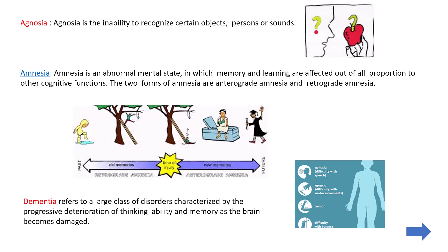Amnesia is of two types: anterograde and retrograde amnesia. Retrograde amnesia means that whatever happened before the amnestic incident, the person cannot remember. Anterograde amnesia means after the amnestic incident, whatever happens in the person's life, they cannot recall. So in anterograde amnesia, after the incident, the person keeps forgetting everything that happens going forward.